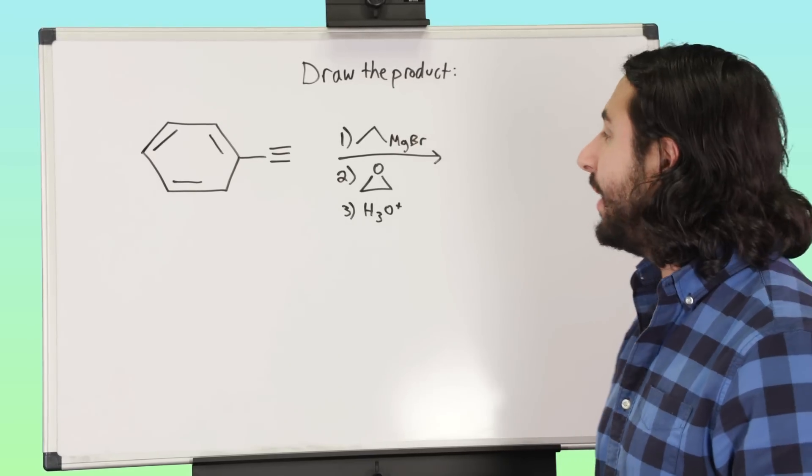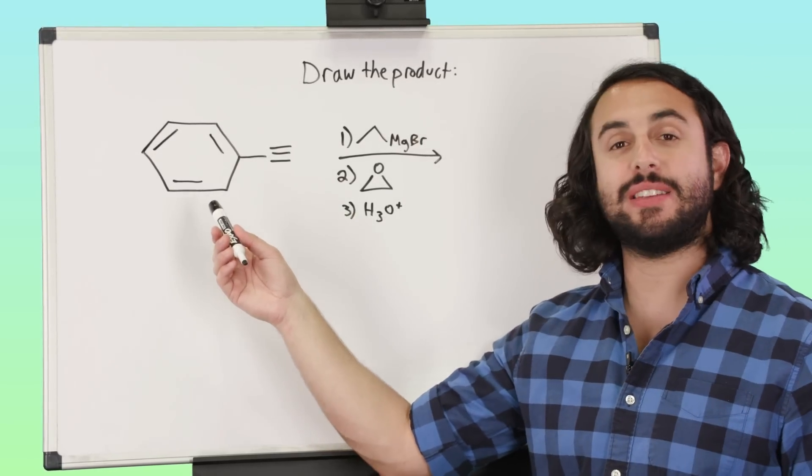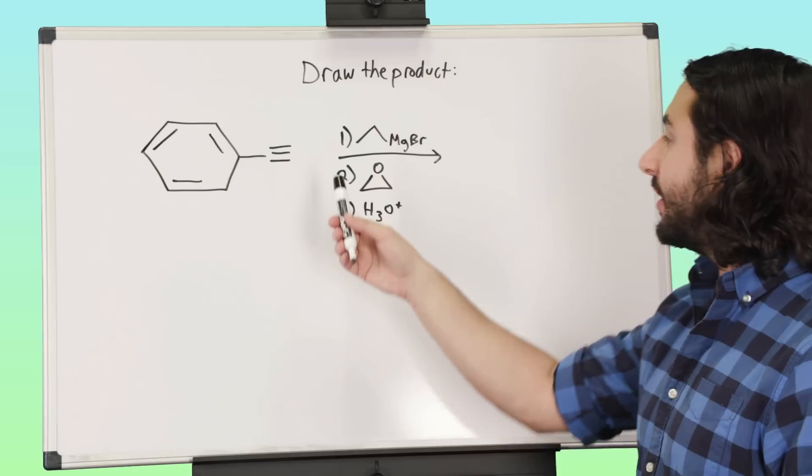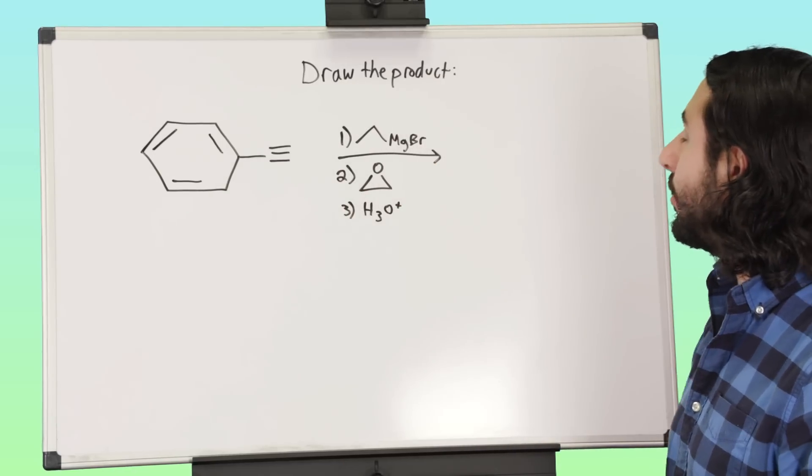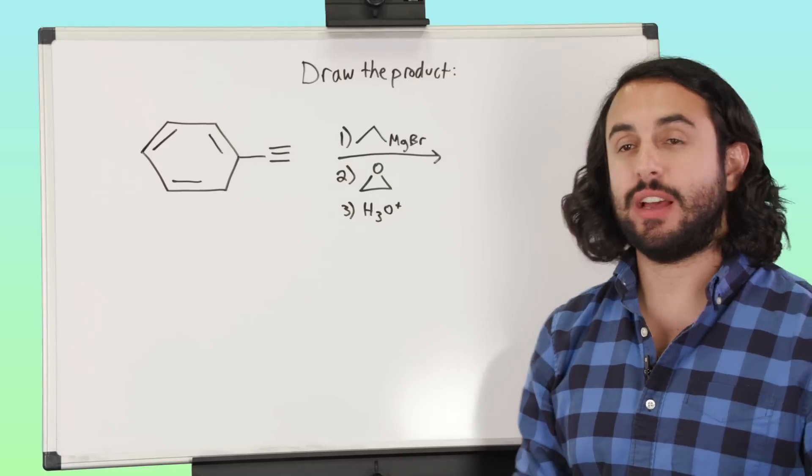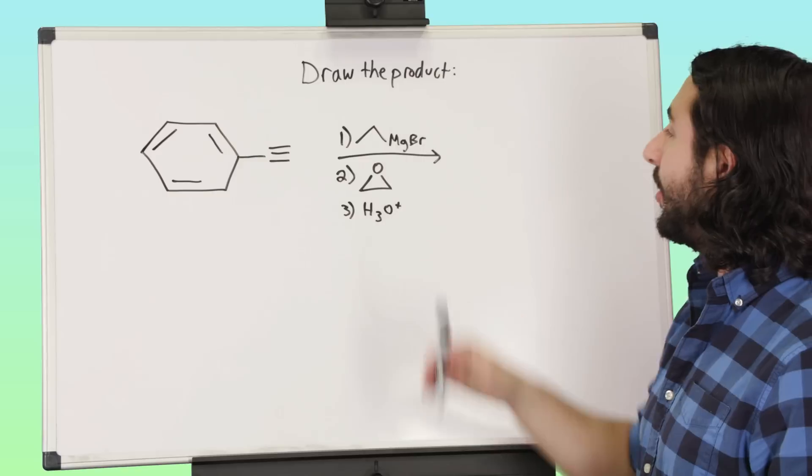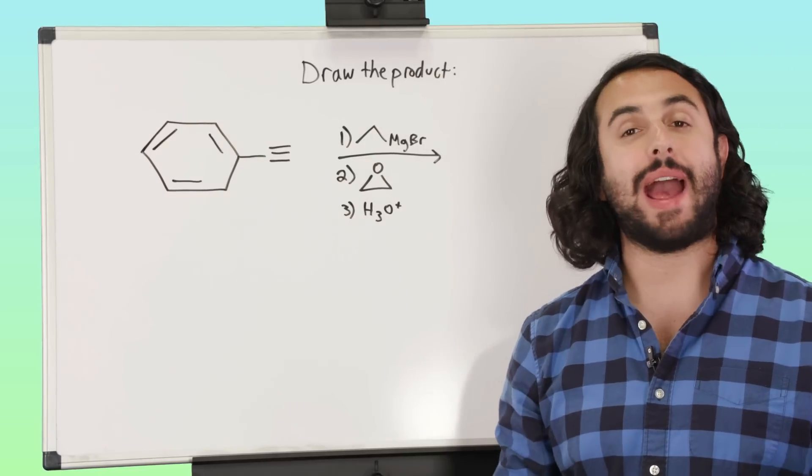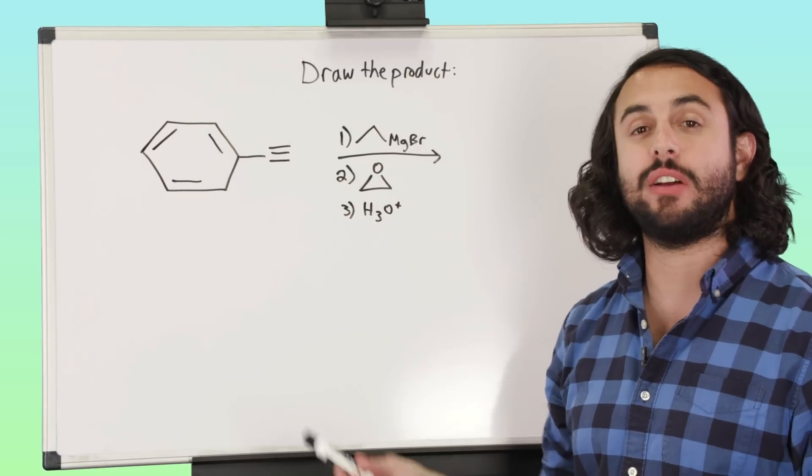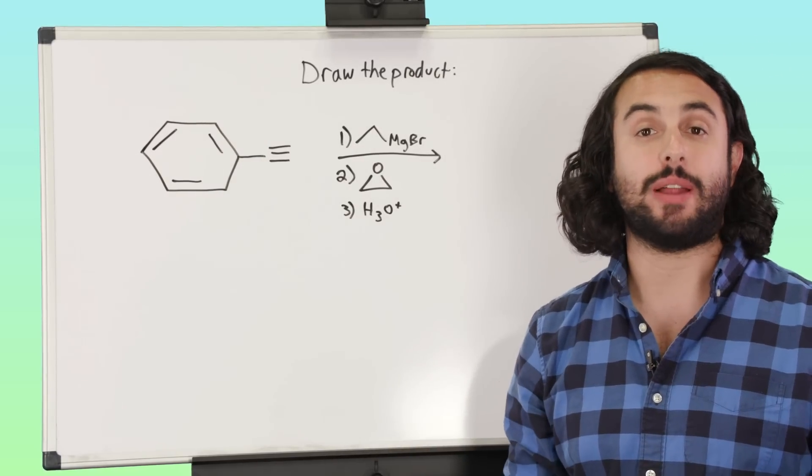Hey guys, so for this practice problem we have this starting material, we've got this alkyne, and we are going to subject this to a series of three reaction conditions. So we want to take a look at these, see if we can think of what kind of chemistry might be happening, and we want to draw the product of this sequence of reactions, so give it a shot.